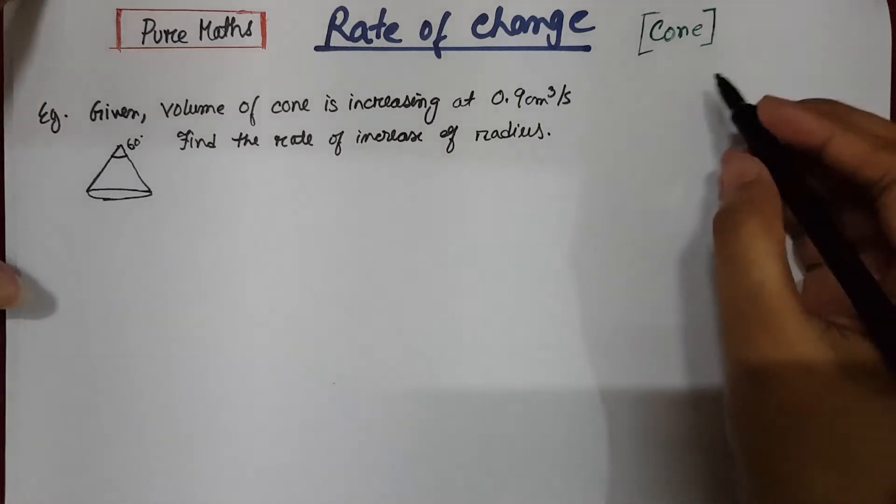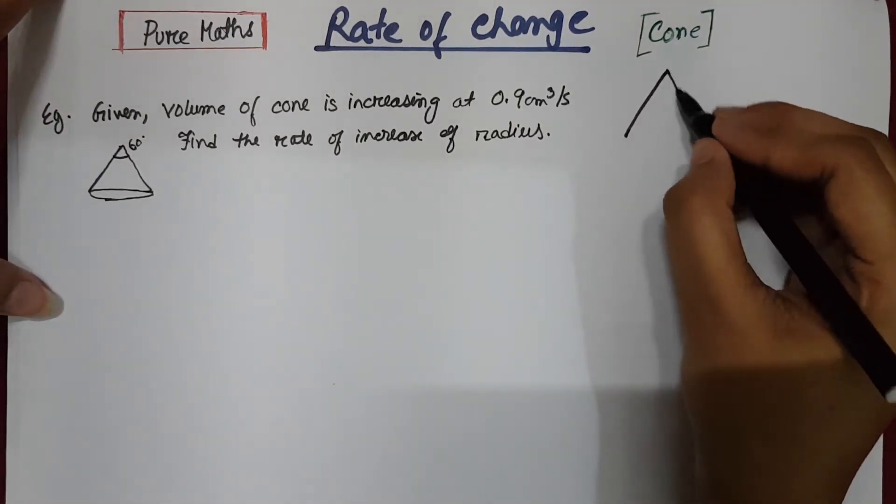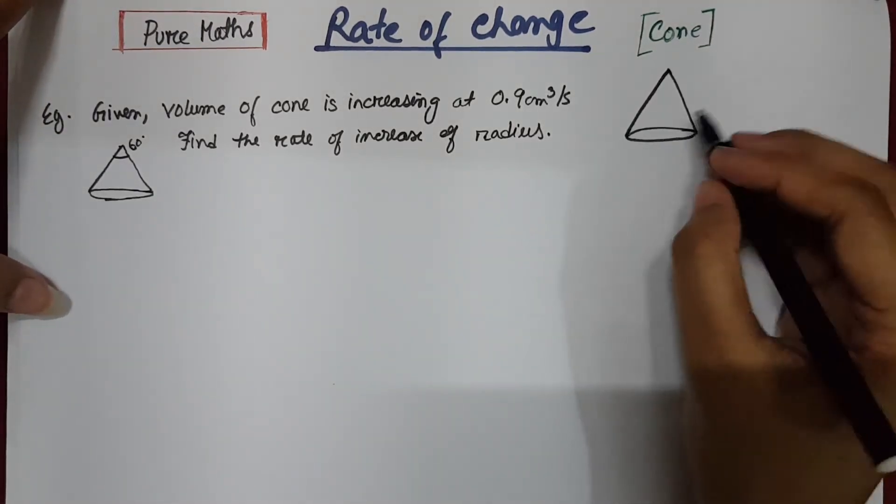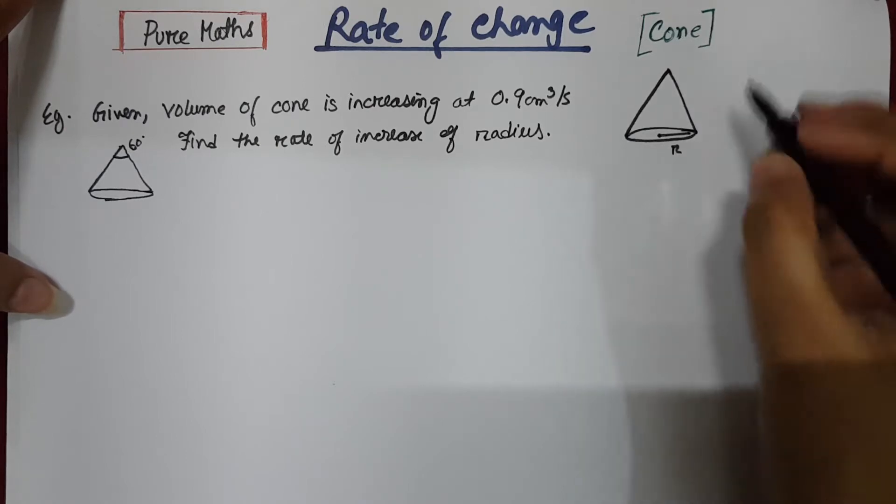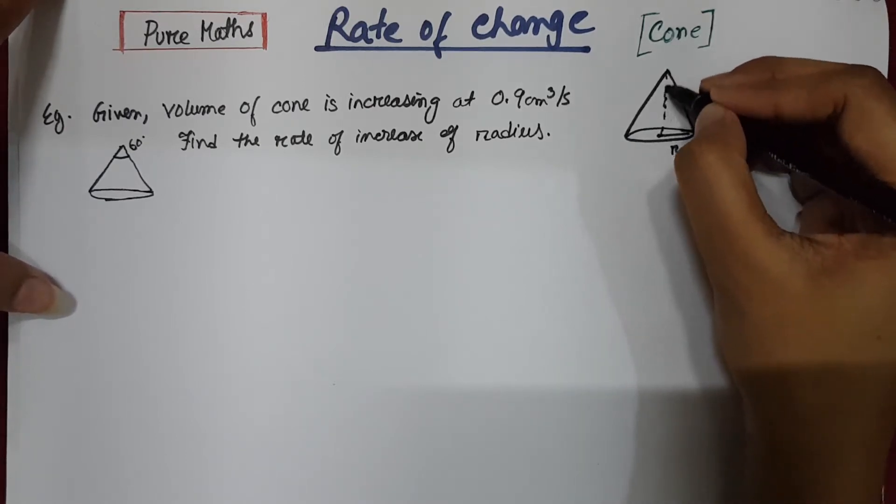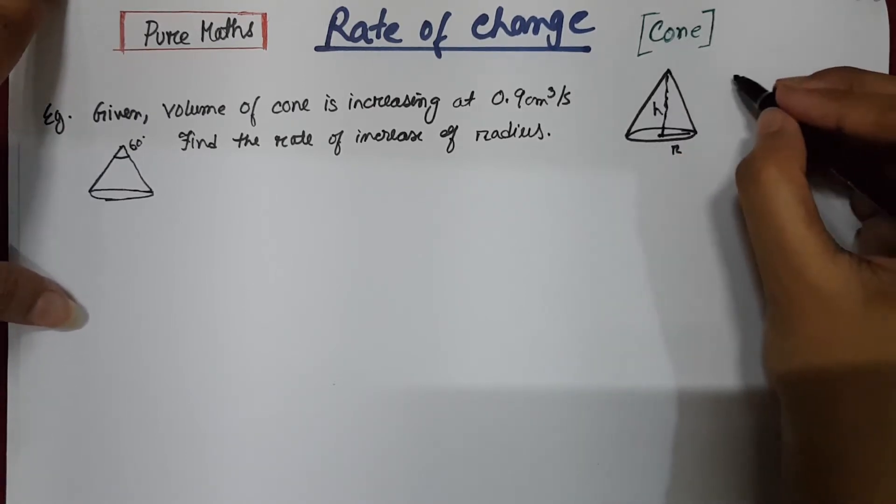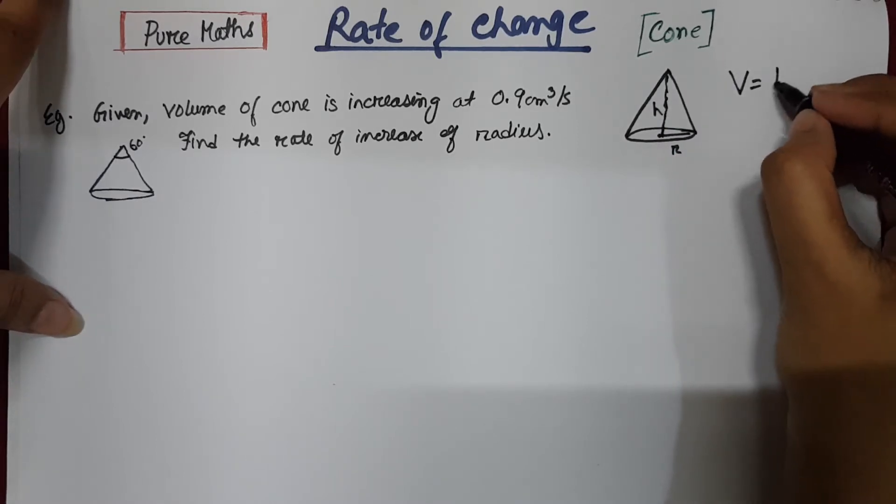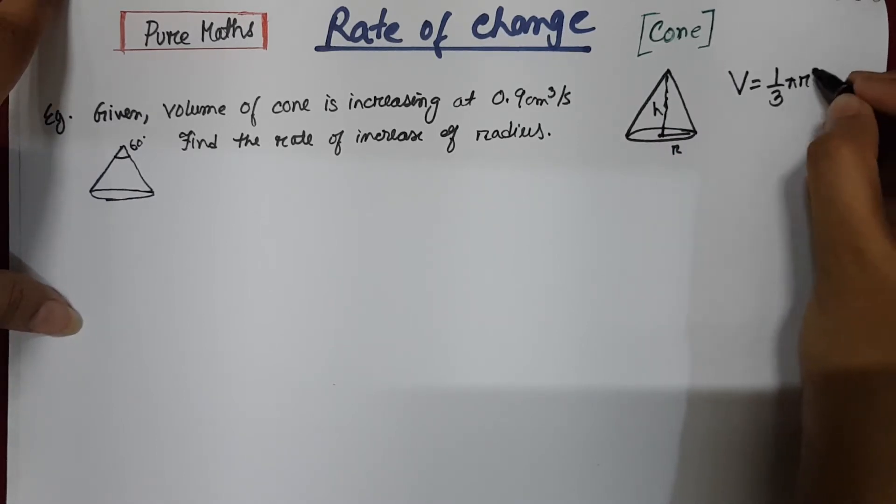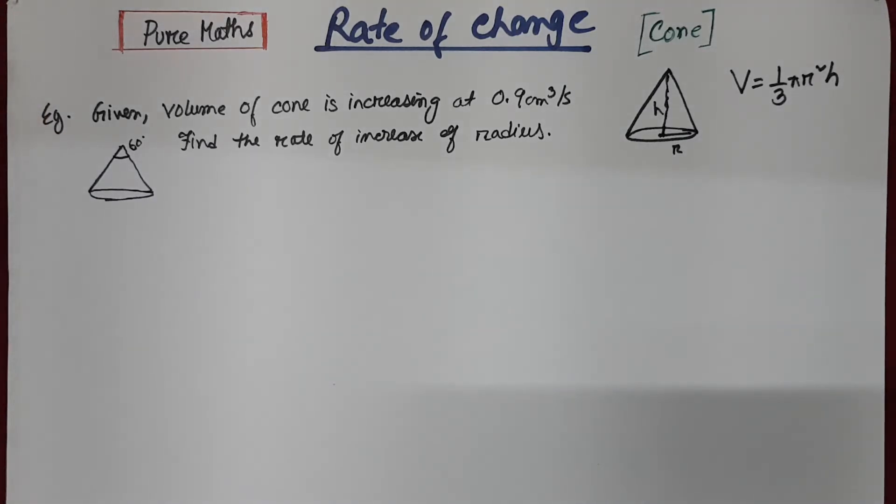So suppose you have a cone here, so the radius of the cone is r and the height of the cone is h. So the volume of the cone is 1 by 3 pi r square h.